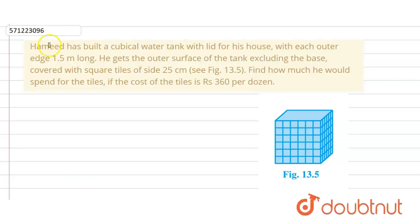In the given question, Hamid has built a cubical water tank with lid for his house with each outer edge 1.5 meters long. He gets the outer surface of the tank excluding the base covered with square tiles of side 25 centimeters. We have to find how much he would spend for the tiles if the cost is Rs. 360 per dozen.